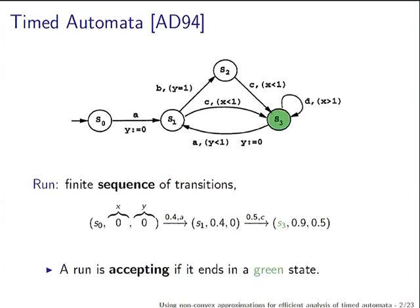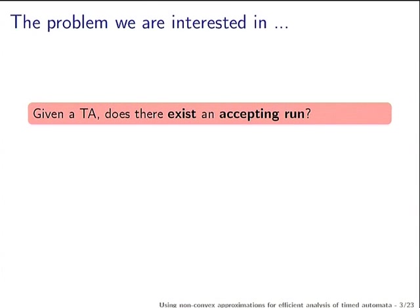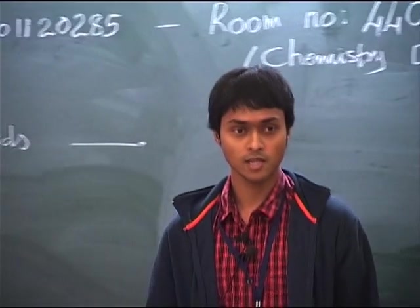Starting from the initial configuration where the initial state is S0 and X and Y are 0, suppose the automaton spends 0.4 time units in state S0. The values of X and Y increase to 0.4, then it takes the transition. The value of X stays the same but Y becomes 0 because it was reset. A run is said to be accepting if it ends in a final (green) state. The question is: given an automaton, does there exist an accepting run?